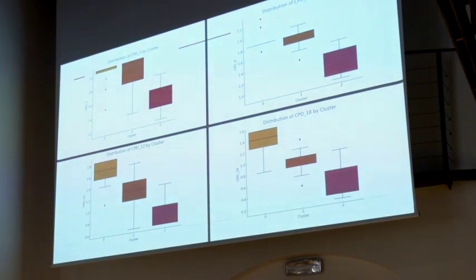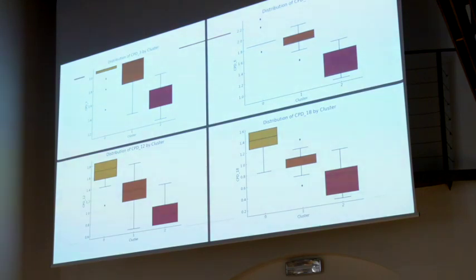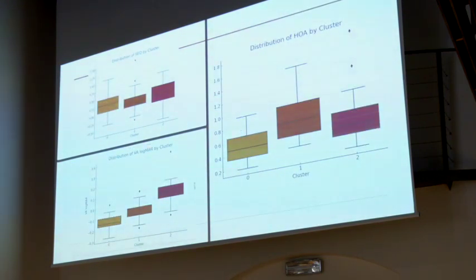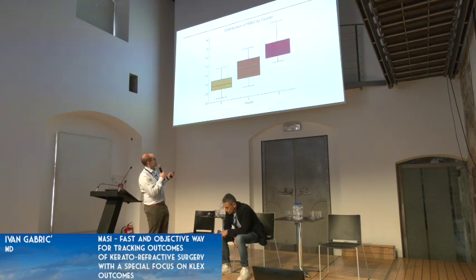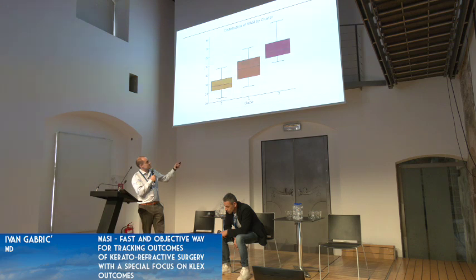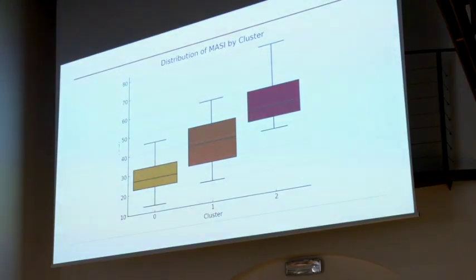Why is 18 important? 18 cycles per degree is the number where you define those tiny little details — the difference between a C and an O or a G at the 20/20 line. The one with high contrast sensitivity will be able to tell those small things, or when doing Landolt rings. Meanwhile 3 CPD is a very low frequency, more like the 20/200 line. If you look at the distribution of spherical equivalency, they're all about the same. HOA is virtually the same. There is a little difference in LogMAR — expected, because a highly irregular corneal surface will cause LogMAR to suffer. But MASI by cluster is very clear: MASI was the biggest predictor. Low MASI for good vision, medium MASI for okay vision, high MASI for very bad vision.